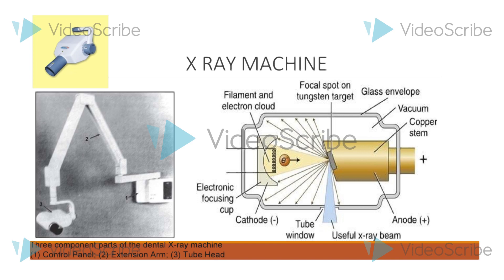The anode consists of tungsten target embedded in a copper stem. The target converts kinetic energy of electrons into X-rays. The copper stem is a good thermal conductor and removes heat from the tungsten and reduces the target melting.